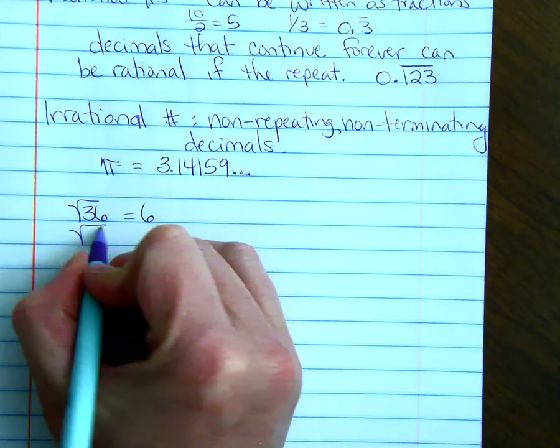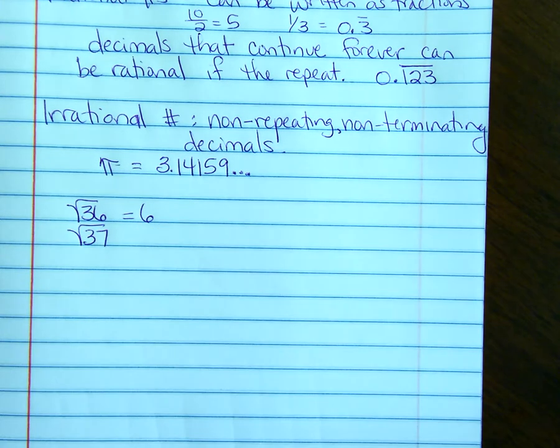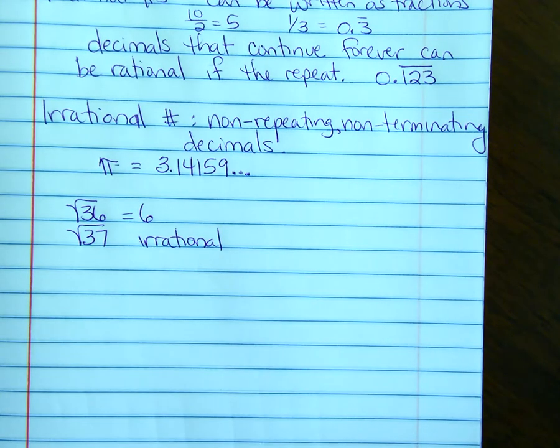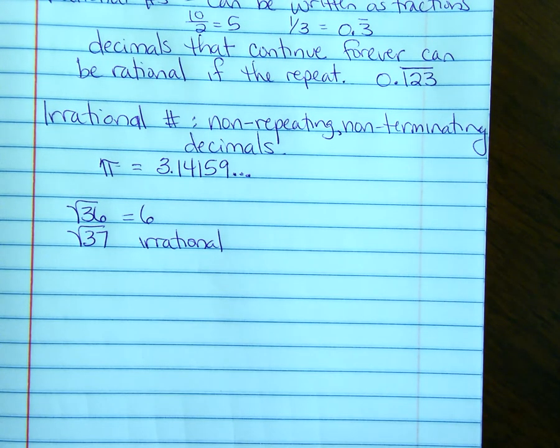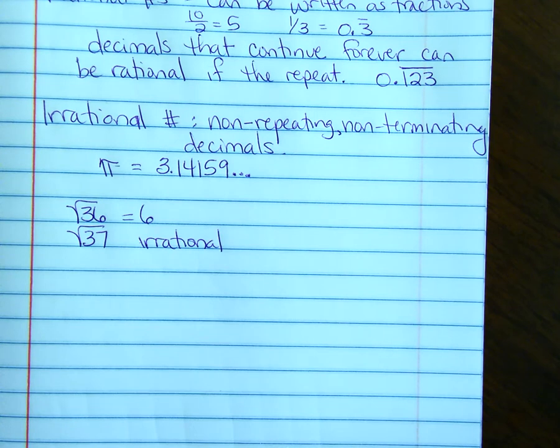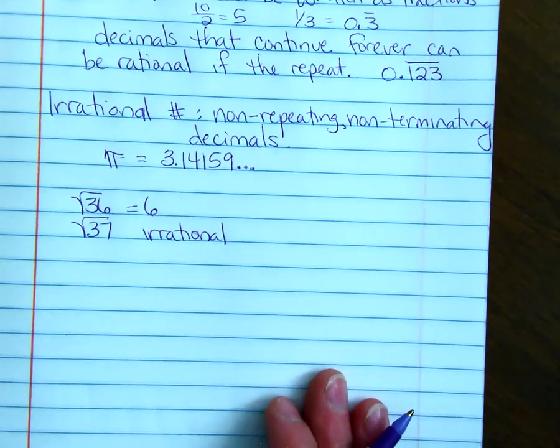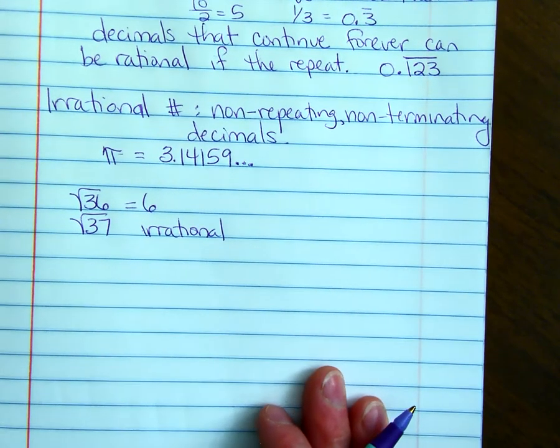The square root of 37 is irrational because we can't simplify it at all. That's the answer, or that's the number, is square root of 37. And sometimes we get that number as an answer, and it's okay. We don't have to be afraid of writing an irrational number as an answer to any problem because it is a number.